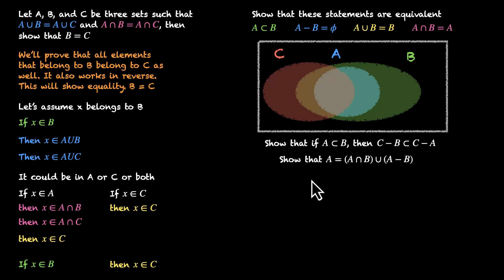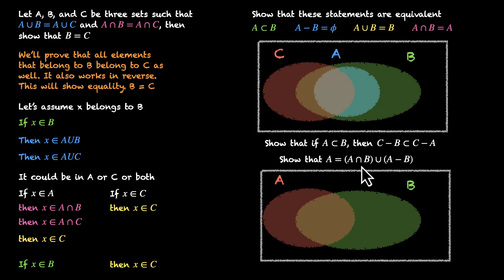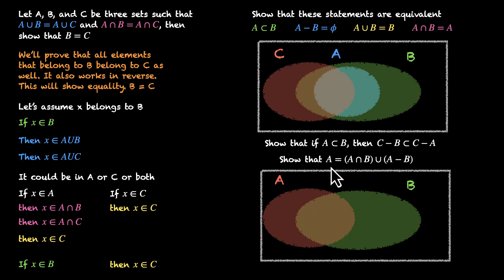Show that A equals (A intersection B) union (A minus B). A intersection B is the overlapping area, and A minus B is the part of A not in B. If we take the union of these two parts, we get the entire set A. So A equals (A intersection B) union (A minus B) — this is true.